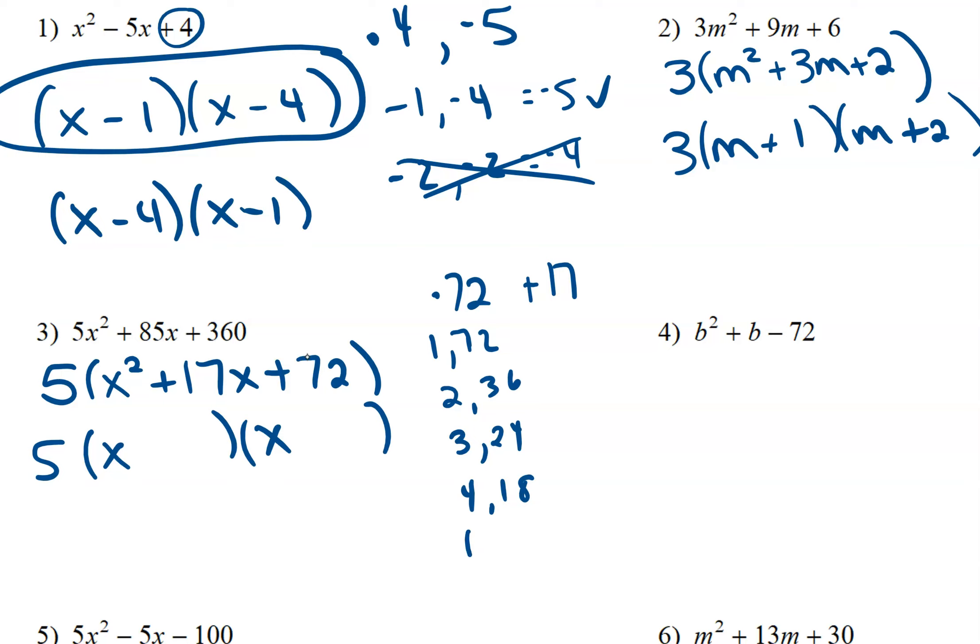5 doesn't go into it. 6 times 12. Nope. 8 times 9. That's our pair. 8 times 9. So plus 8 and plus 9. Remember to keep the 5 in the front. It's part of our final answer.